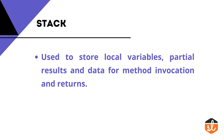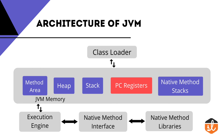Next is the PC Registers — PC stands for Program Counter, so it is also called the Program Counter Register. It contains the address of the JVM instructions currently being executed. Then there are the Native Method Stacks, where all the native methods currently used in the application are stored.